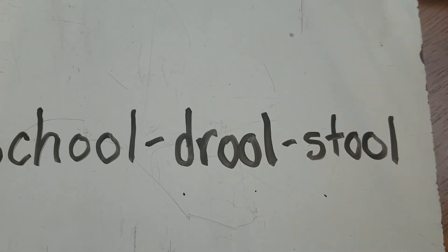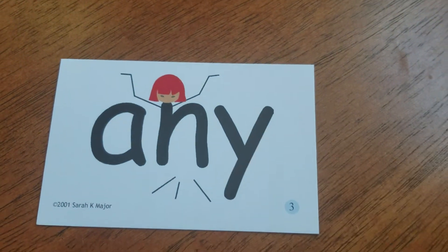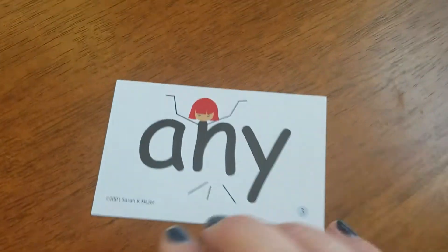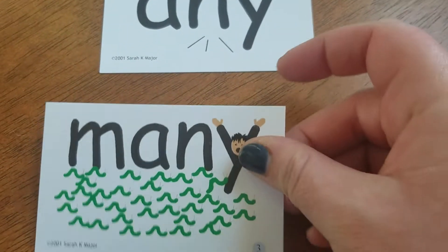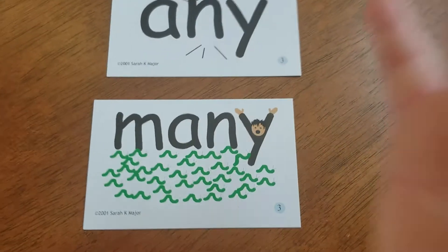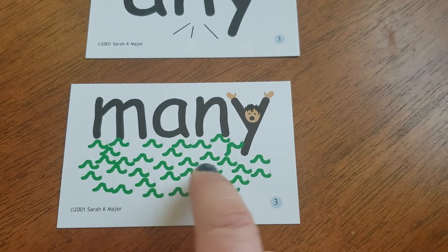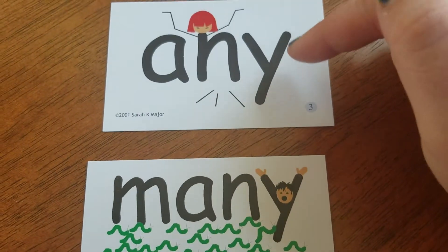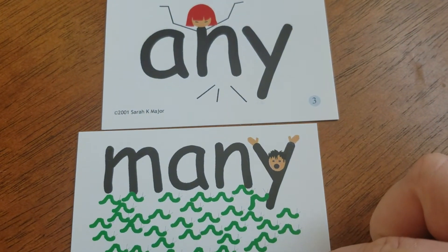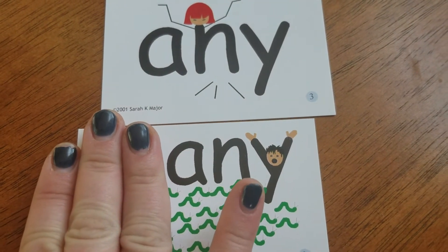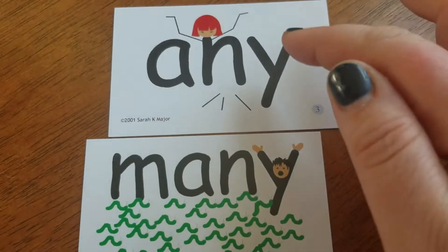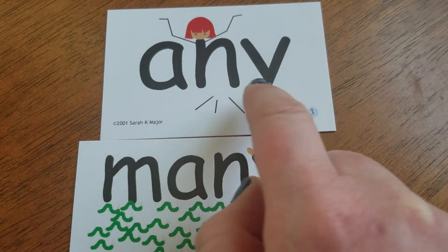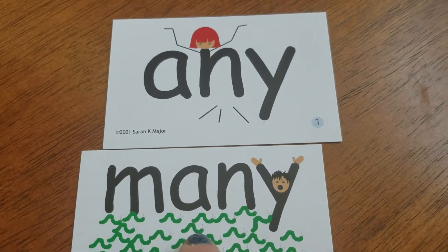Alright, today we don't have a word of the day — we have two trick words. Our first word is 'any.' I don't have any. A-N-Y. And then we have the word 'many.' There are many inchworms here. Why do they go together? You see 'any' inside of 'many.' So if you can spell any — A-N-Y — then you can spell many — M-A-N-Y.